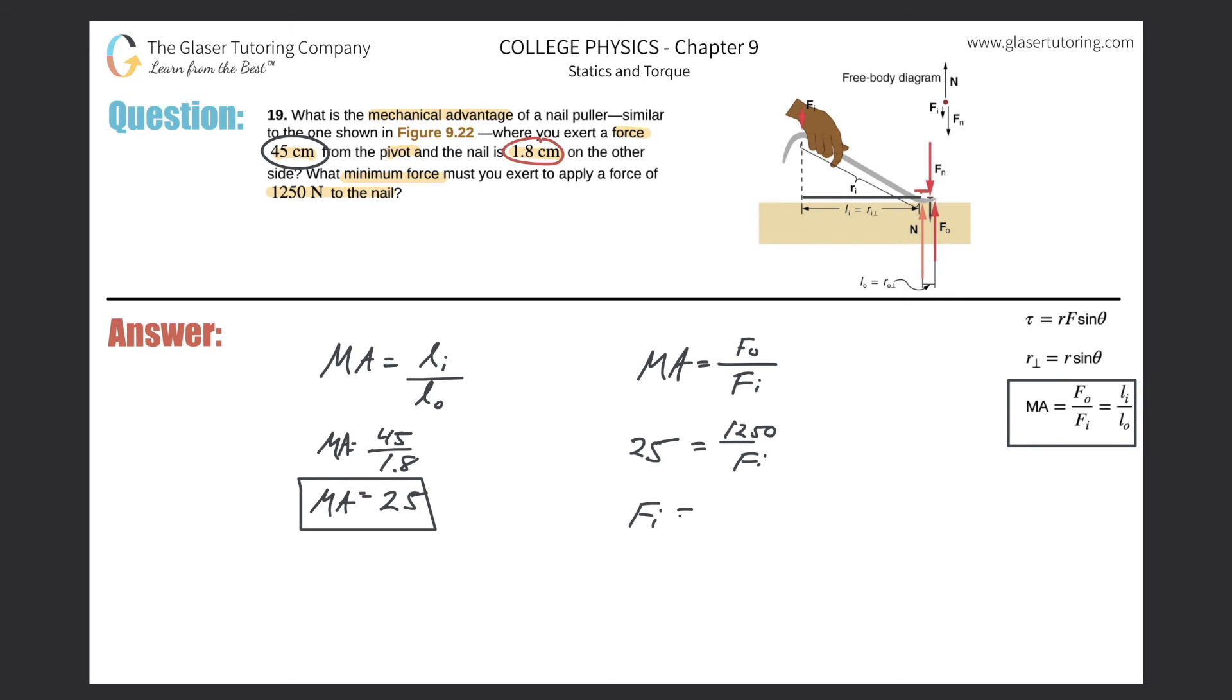Solving for the input force: 25 = 1250 over Fi. So Fi = 1250 over 25, which comes out to 50 newtons. This is a newton value on top with no units on the bottom, so the answer is in newtons, and that should make sense.